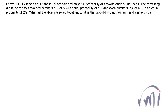Hi, so here we have a problem which was sent by Mr. Tanika Chalam. In this problem he has 106 dice. Of these 99 are fair and have 1/6 probability of showing each face. The remaining die is loaded to show odd numbers — that is 1, 3, or 5 — with equal probability of 1/9, and even numbers — that is 2, 4, and 6 — with an equal probability of 2/9. When all the dice are rolled together, what is the probability that their sum is divisible by 6?